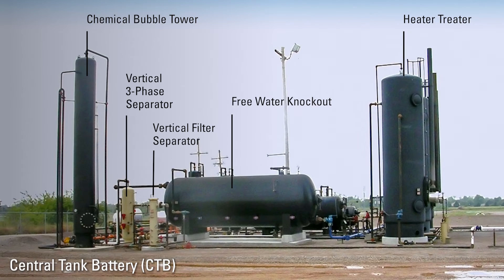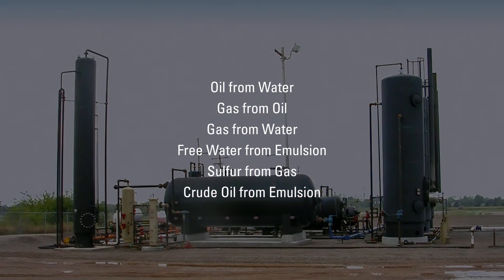The makeup of this central tank battery shows us that multiple vessels are sometimes needed to get the resources to market. Several products are being separated from each other: oil from water, gas from oil, gas from water, free water from emulsion, sulfur from gas, and crude oil from emulsion — and that's just to name a few.